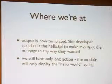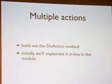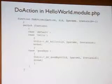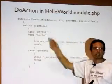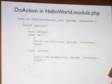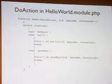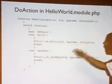At this point our output is templated. The site developer could go in and change that to whatever they would like it to look like. We still have only one action, which is hello world. So what we're going to do is build out the do_action method. One of the things that gets passed to the do_action method is this action string, and there's a magic value called 'default'. When somebody places their tag in their page they specify an action — if they pass the action 'hello', we're going to call a function within our module called do_hello and pass it some of those parameters. If it's 'goodbye', we're going to call the do_goodbye function.